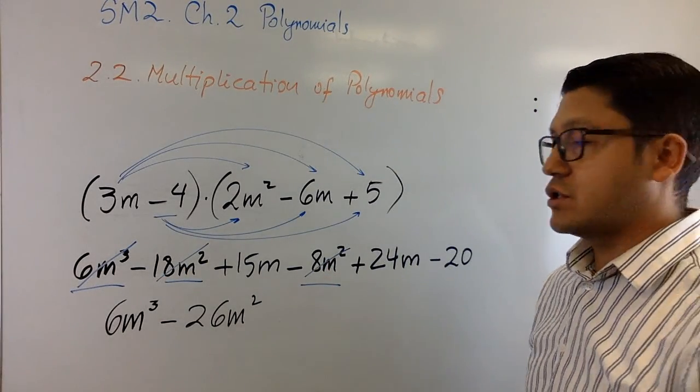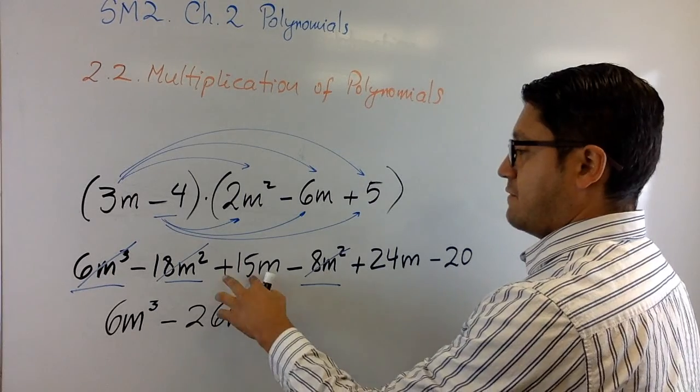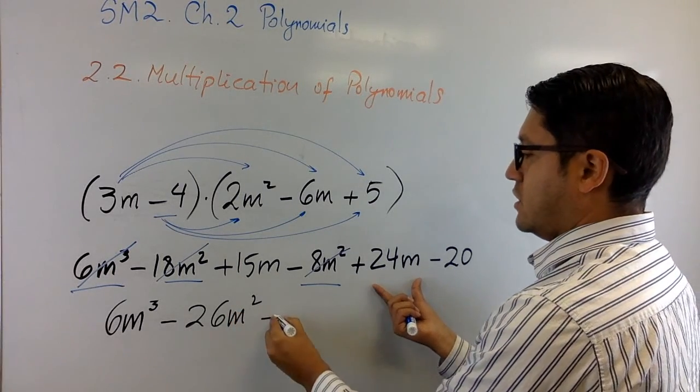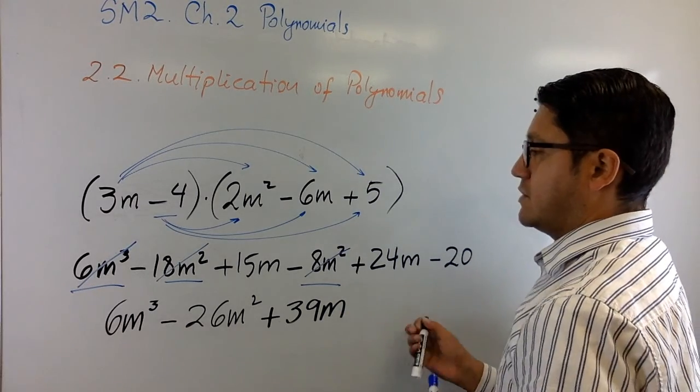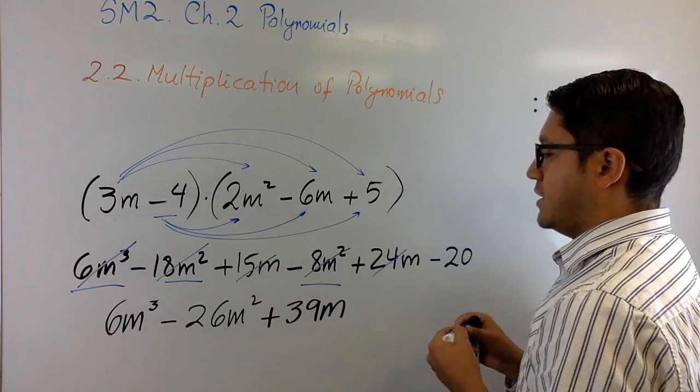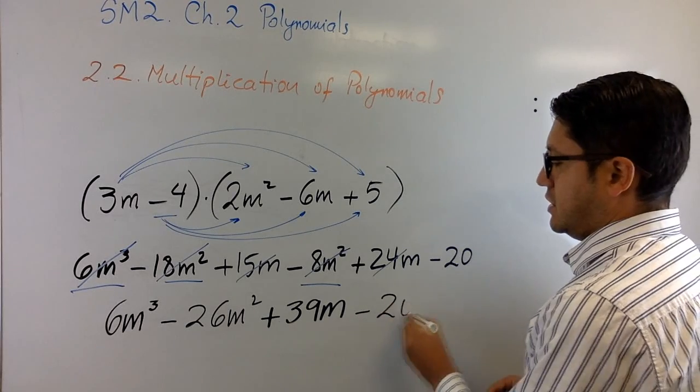Now let's take a look at the linear terms, which are 15 and 24. That's a positive 39m. I'm done with the linears now. And I just have to write the constant here.